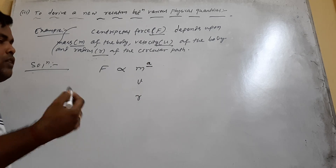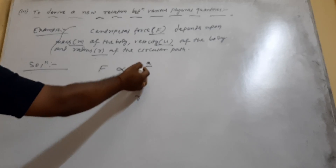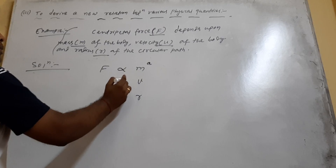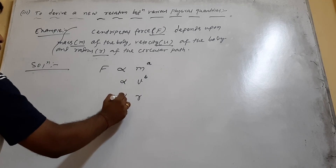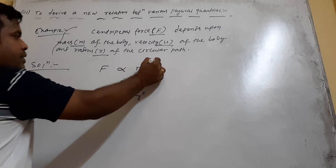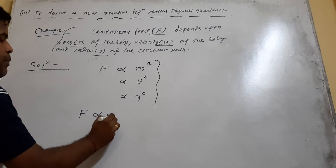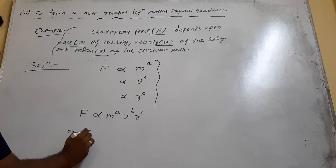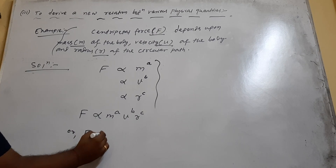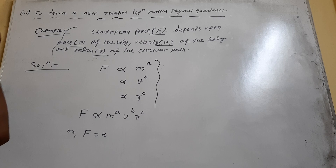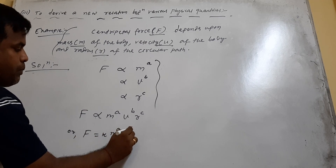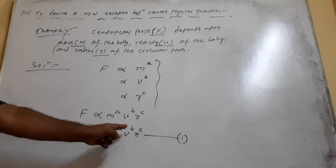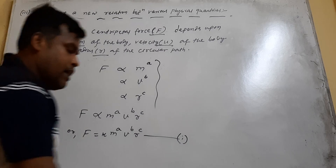Similarly, if A is minus 1, F is inversely proportional to M; if A is minus 2, F is inversely proportional to M squared. Similarly, write F proportional to V to the power B and proportional to R to the power C. Now combine: F is equal to k·M^A·V^B·R^C, where k is a proportionality constant. Now we need to find the values of A, B, and C.